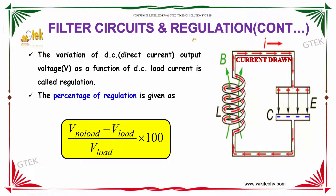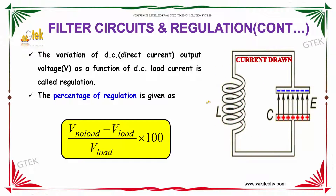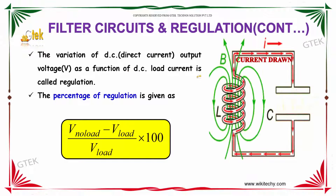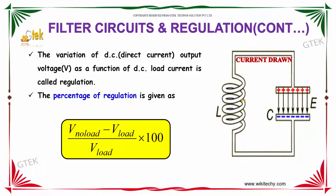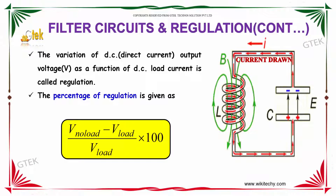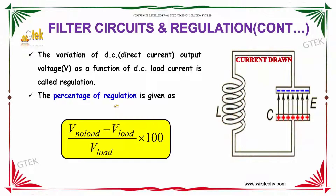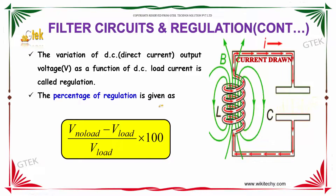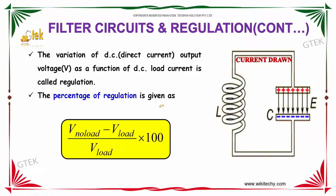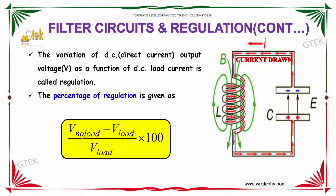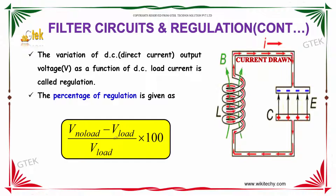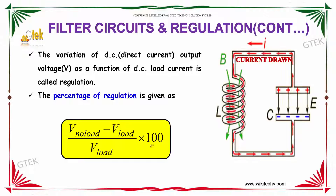We are looking into the filter circuit and regulation. The variation of DC output voltage as a function of DC load current is called regulation. The percentage of regulation is given as the voltage at no load minus voltage at load, divided by voltage at load, into 100.